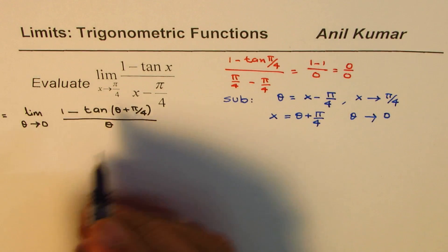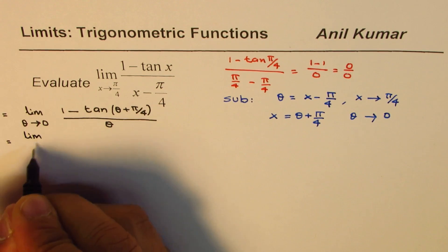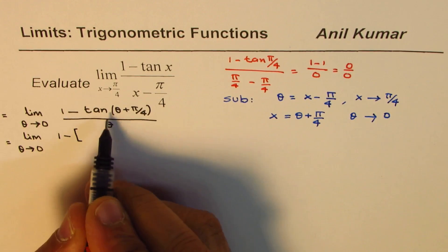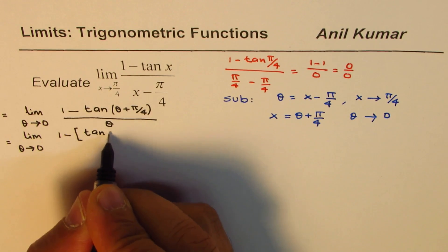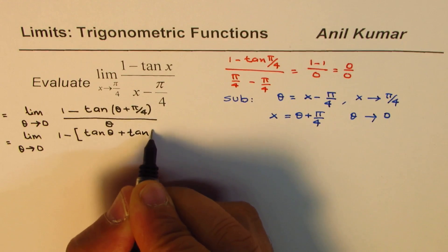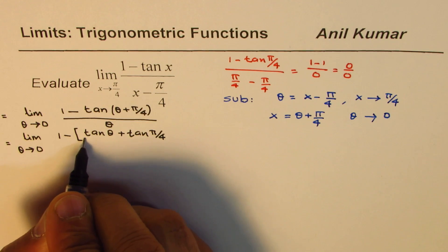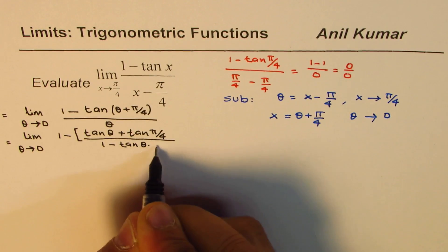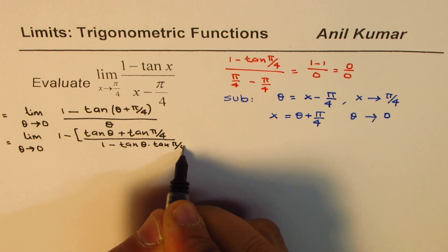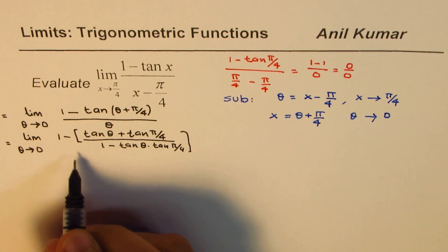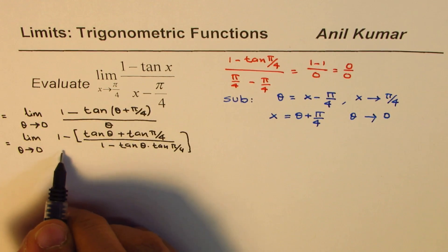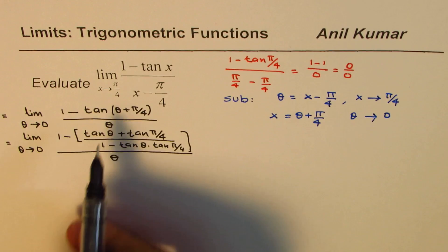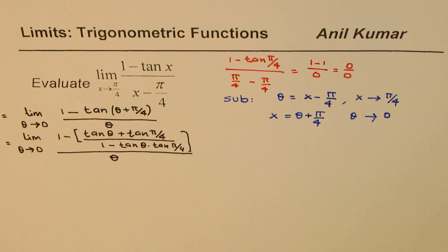Now we can expand this term. We apply the tan(a + b) formula: tan(θ + π/4) = (tan θ + tan(π/4)) / (1 - tan θ · tan(π/4)). So the expression becomes: limit as θ approaches 0 of [1 - (tan θ + tan(π/4)) / (1 - tan θ · tan(π/4))] all divided by θ.